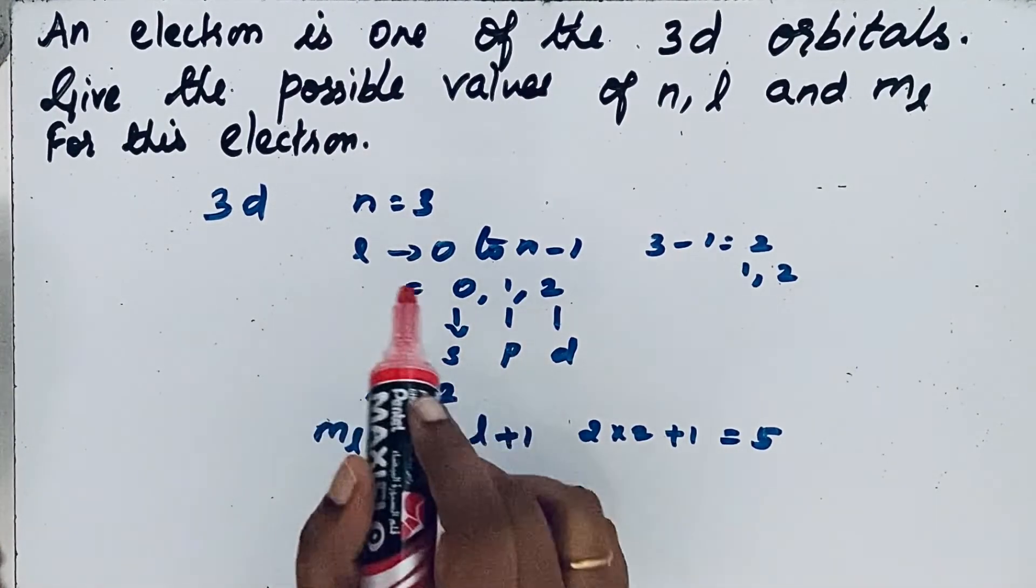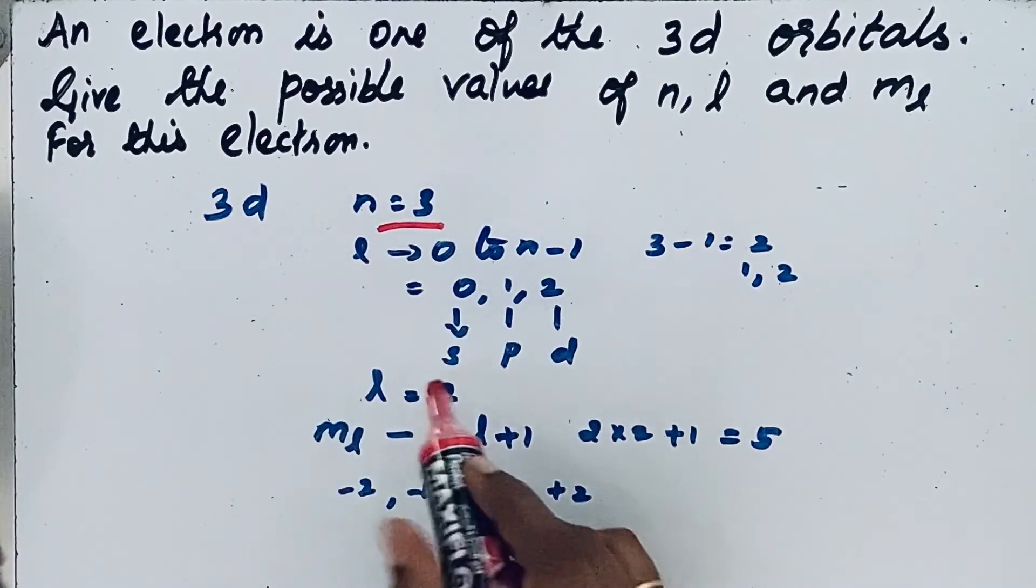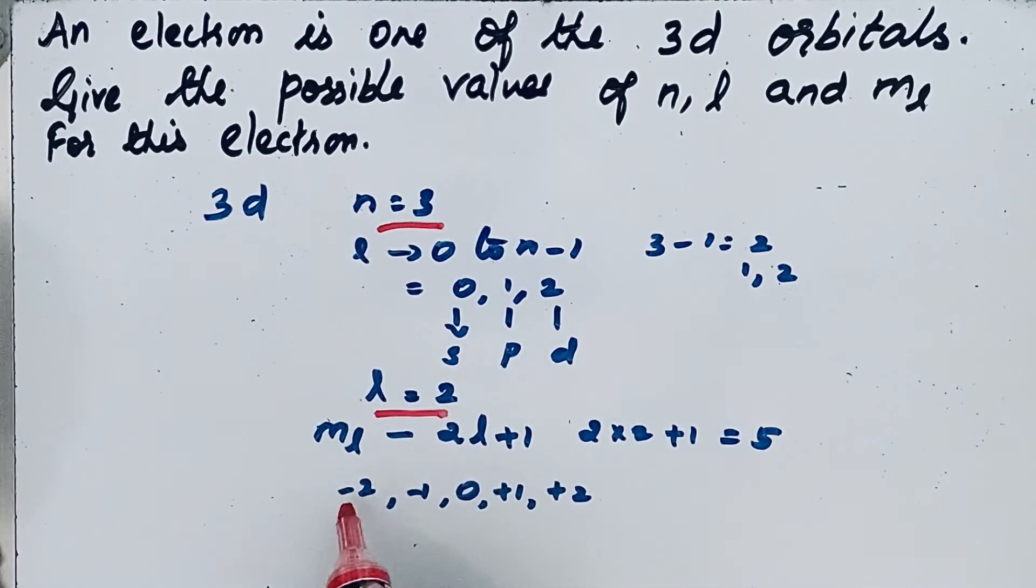So for 3d electrons, n equals 3, l equals 2, and ml equals minus 2, minus 1, 0, plus 1, and plus 2. Thanks for watching.